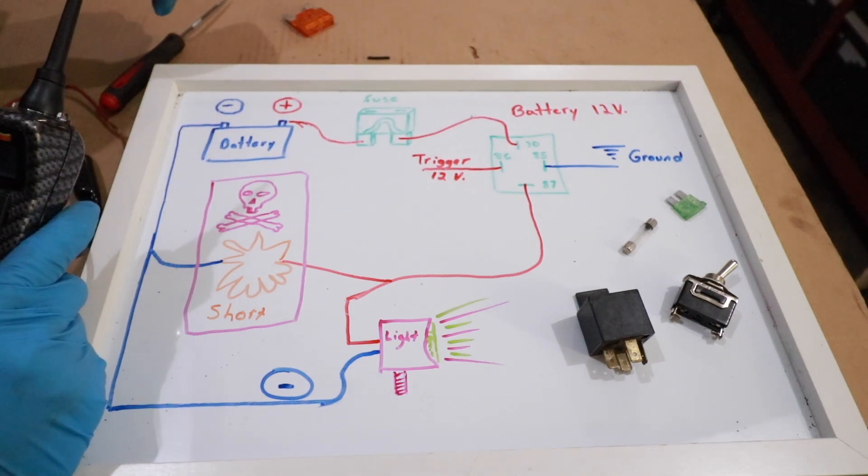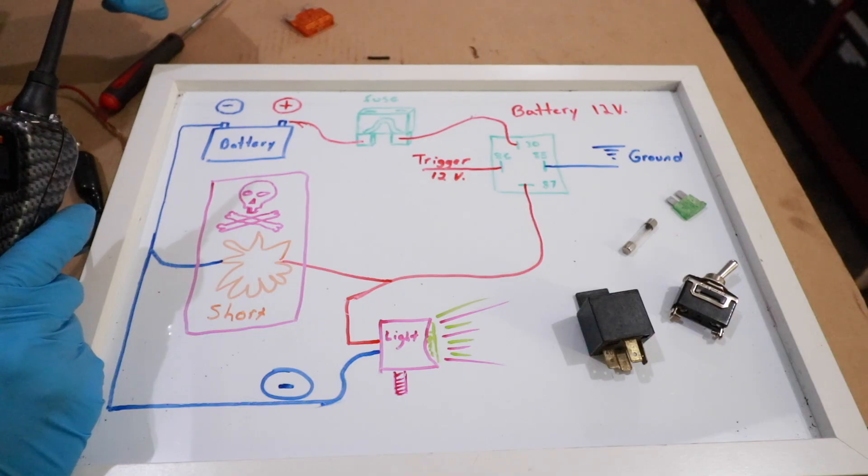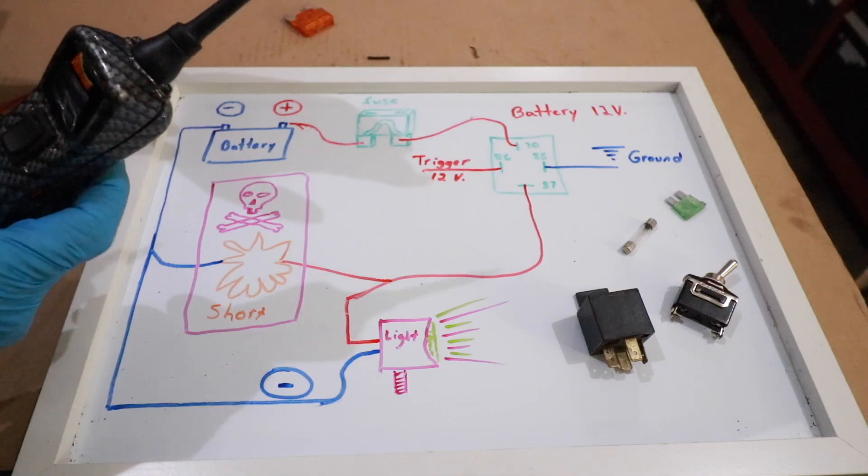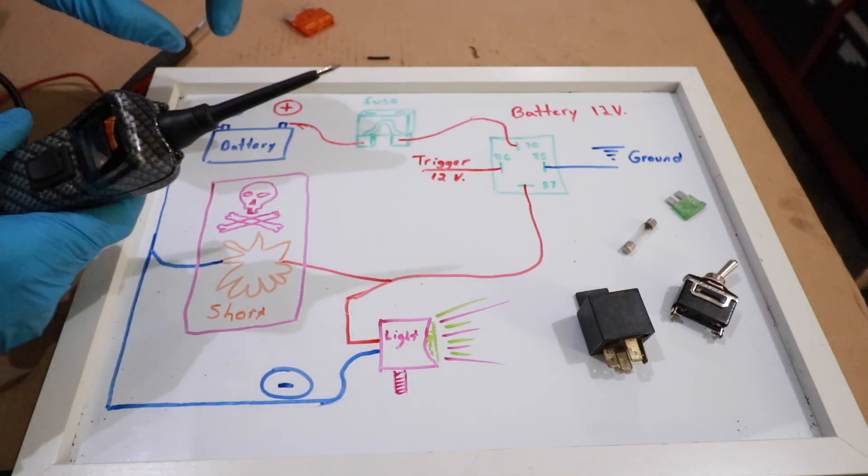Now how do you find out where that short is between the fuse and the component? Well, that's the real question. You're just going to have to do your own detective work. On these modern cars it can be really tricky because you're trying to fish through 25-30 wires in a really tight wire loom.